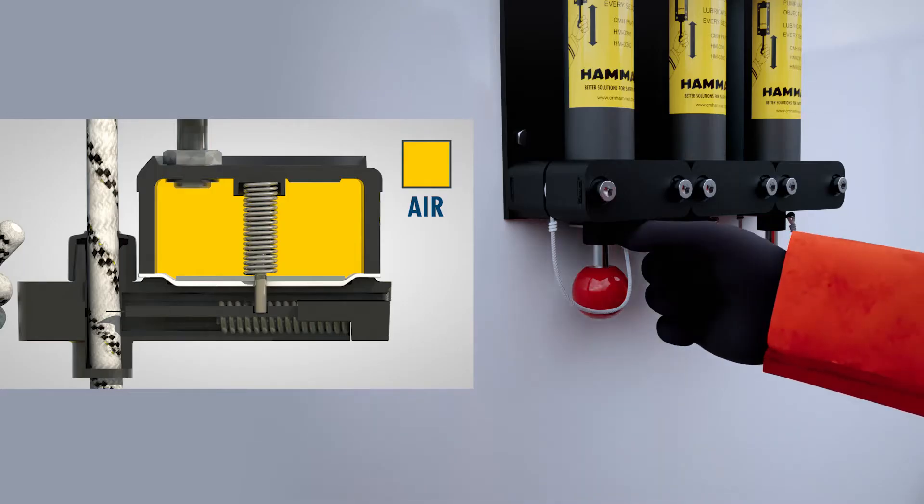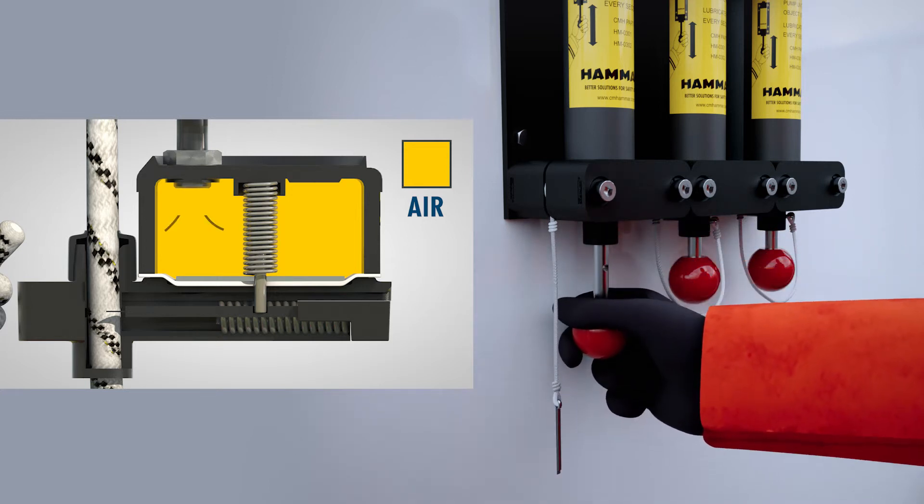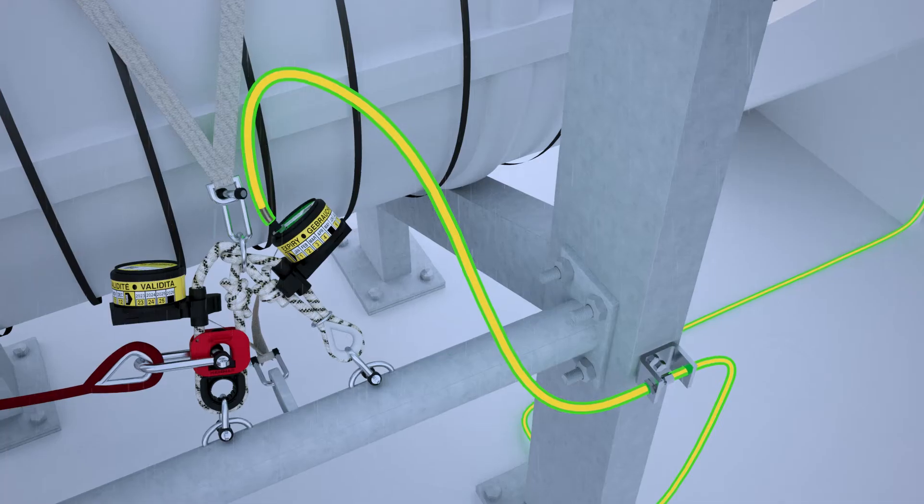When the pump plunger is cycled in and out rapidly, it evacuates the air in the space above the membrane.